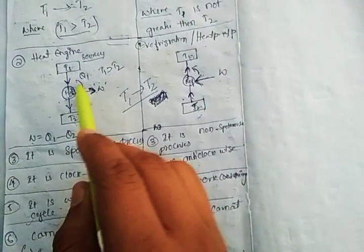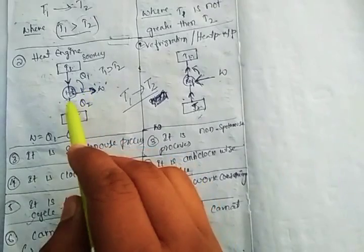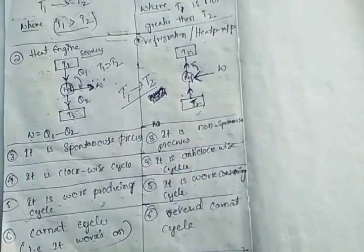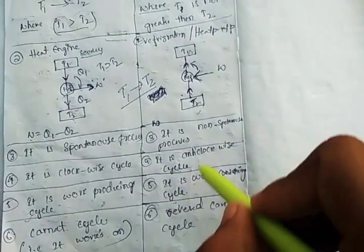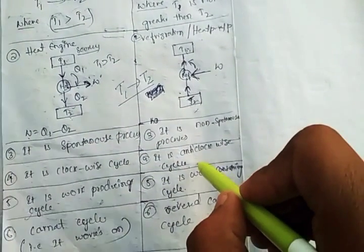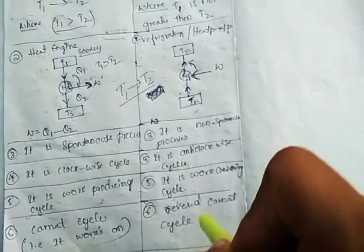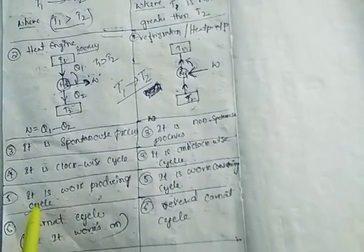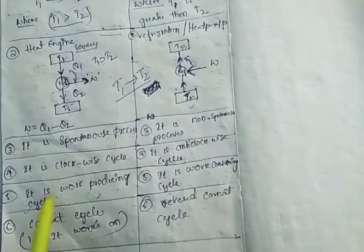The fourth point: the heat engine works as a clockwise cycle, whereas the refrigeration or heat pump works as an anti-clockwise cycle.